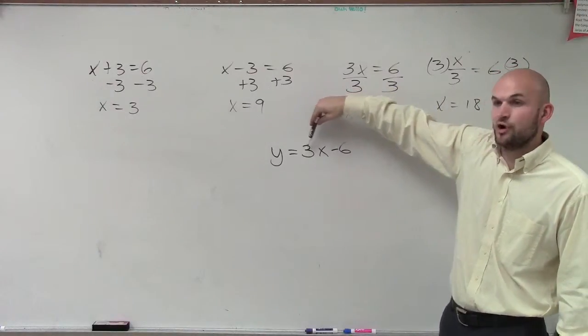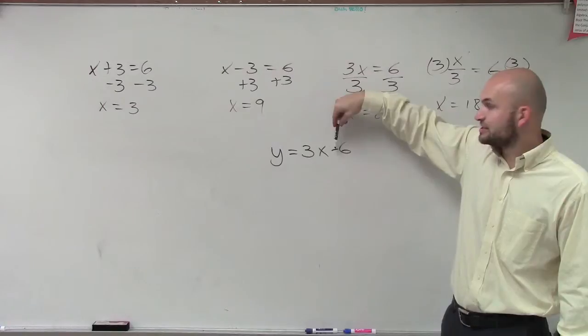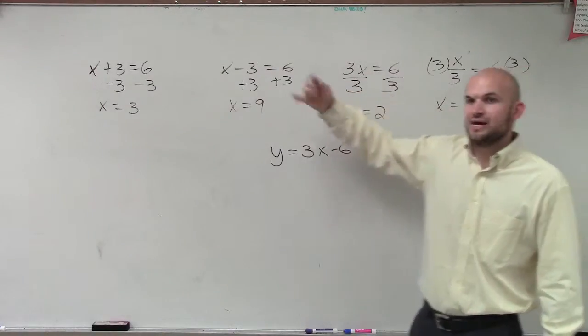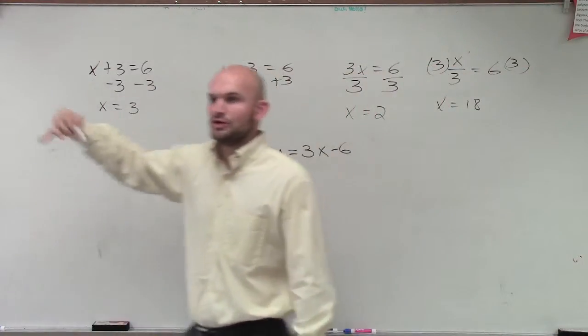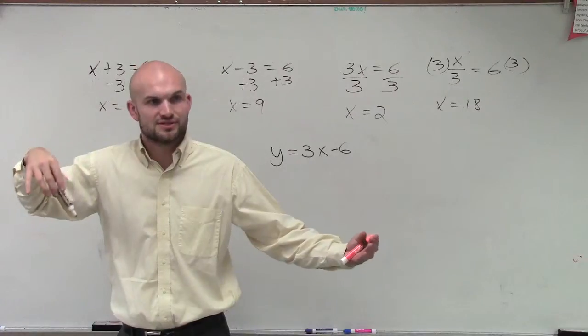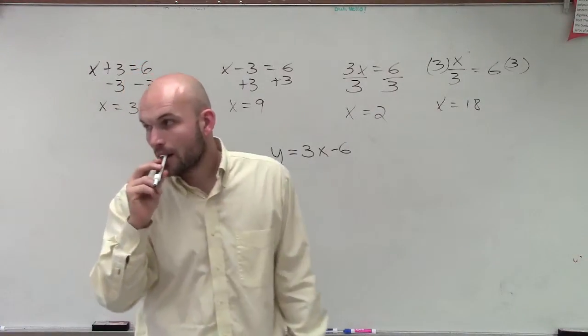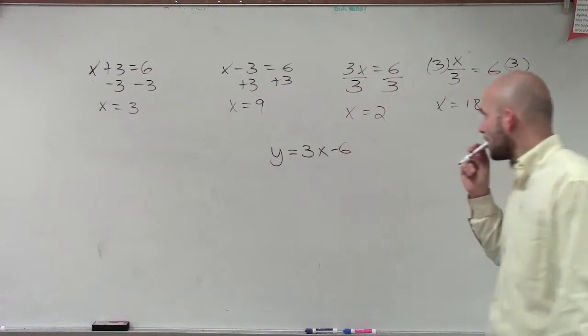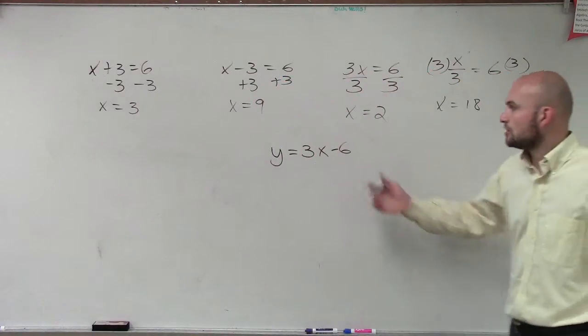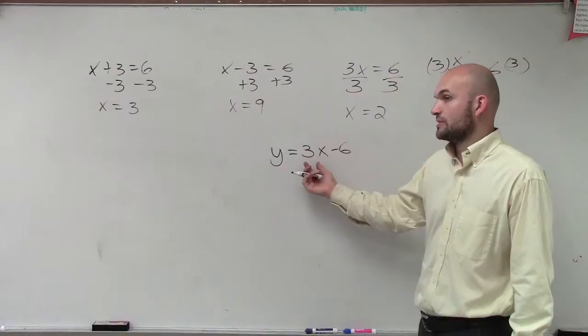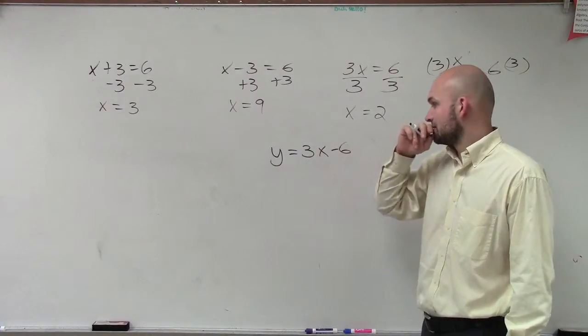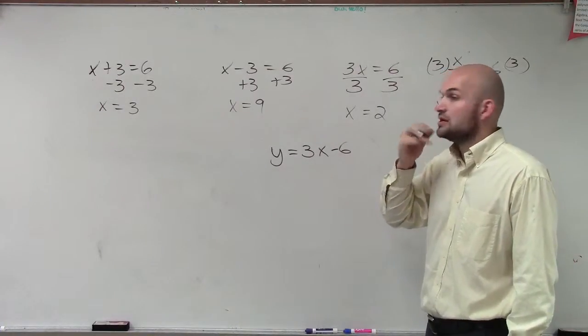Right now this variable x is being multiplied by 3 and it's being subtracted by 6. So do you guys think that the inverse is going to include some of these opposite operations? Yes. Yes, right? Is it already found because there's nothing happening to the variable? Well, there's something happening to the variable, which is the 3 and the x.